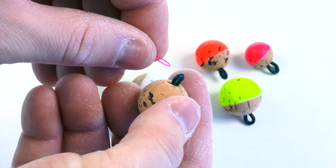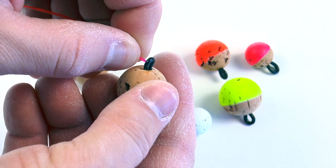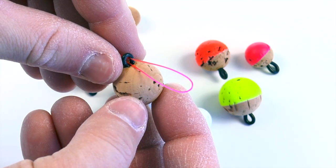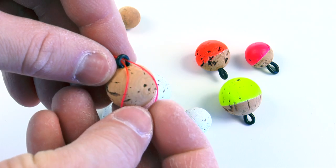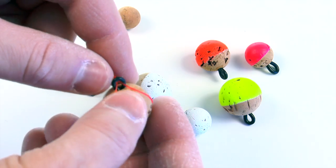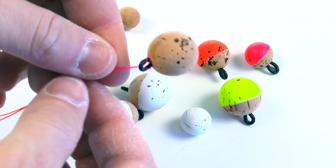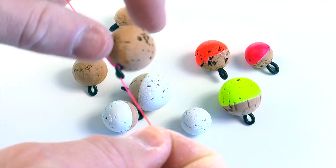Then you simply take the cork indicator and take the loop and slide it through the loop of the indicator. Then you push it a little bit farther so that the loop is large enough where you can fit it over the indicator itself. And you just snug down, and there's your loop-to-loop connection.